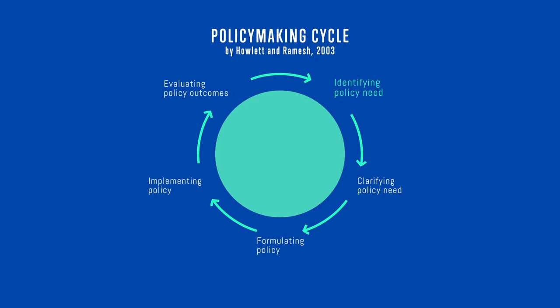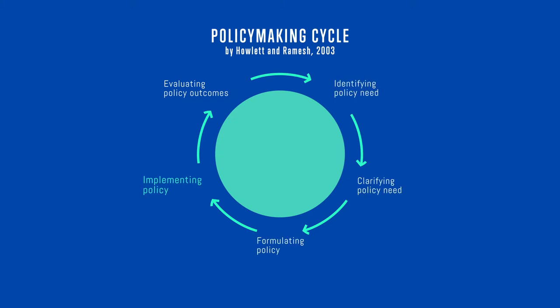But since there is now a problem, this problem needs to be clarified so that an appropriate policy response can be formulated. All this, according to this design approach, only concerns those we think of as policy makers. Those we deem to be policy implementers only enter into the picture after that policy has been designed. It is the public manager who is now taking over to develop or adjust their own public services in such a way that brings the new policy to life. Aside from omitting people and services, this approach also suggests that we go about designing policies in the way of a relay race.